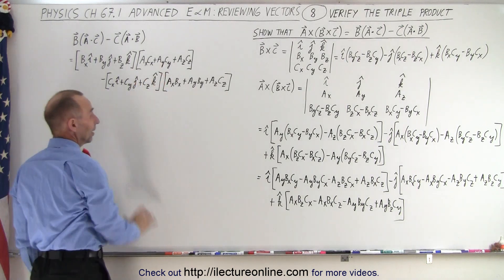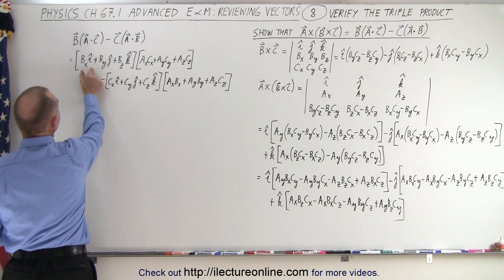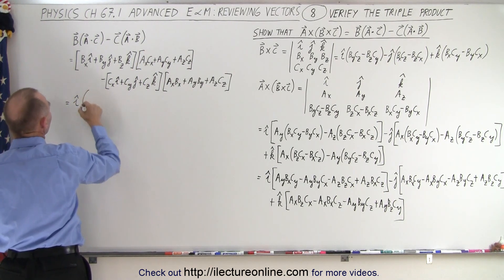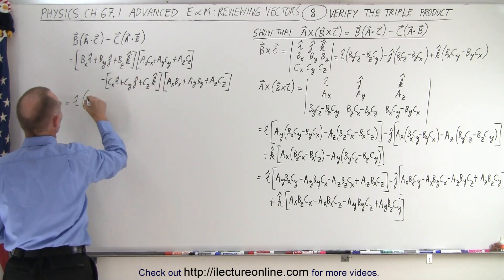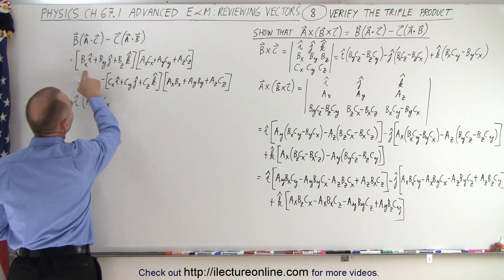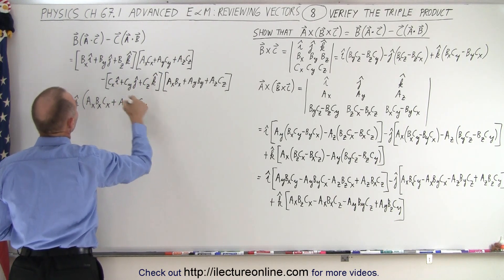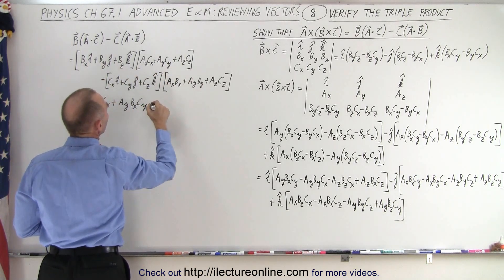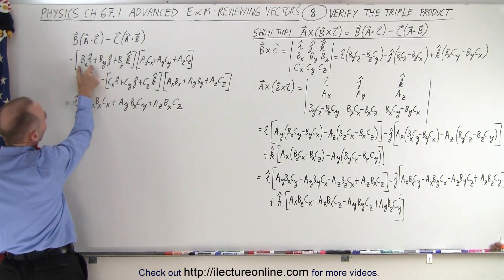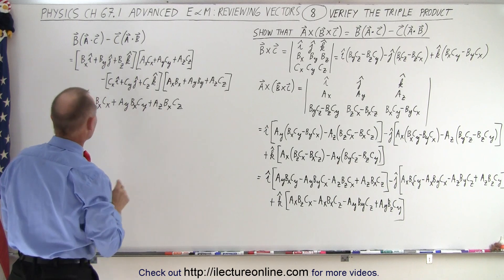Supposedly these two expressions are equal — let's show how. We multiply BX·I times each component of A dot C, giving I times (AX·BX·CX plus AY·BX·CY plus AZ·BX·CZ). Then we subtract CX·I times each component of A dot B, giving minus (AX·BX·CX plus AY·BY·CX plus AZ·BZ·CX). That is the I component of the right side.